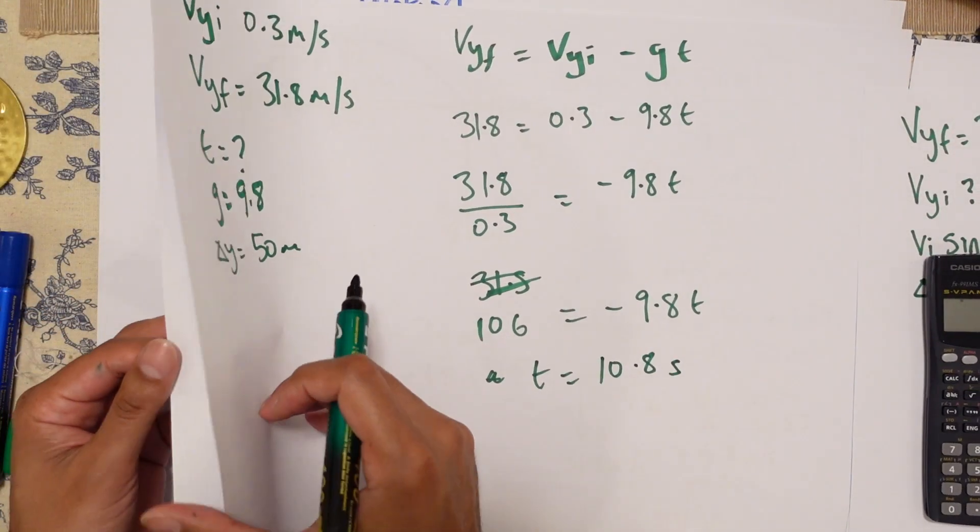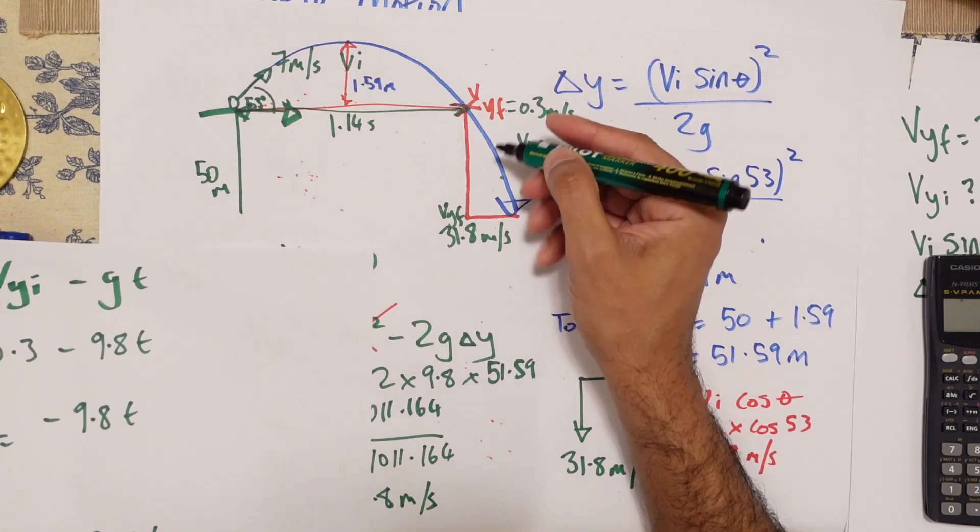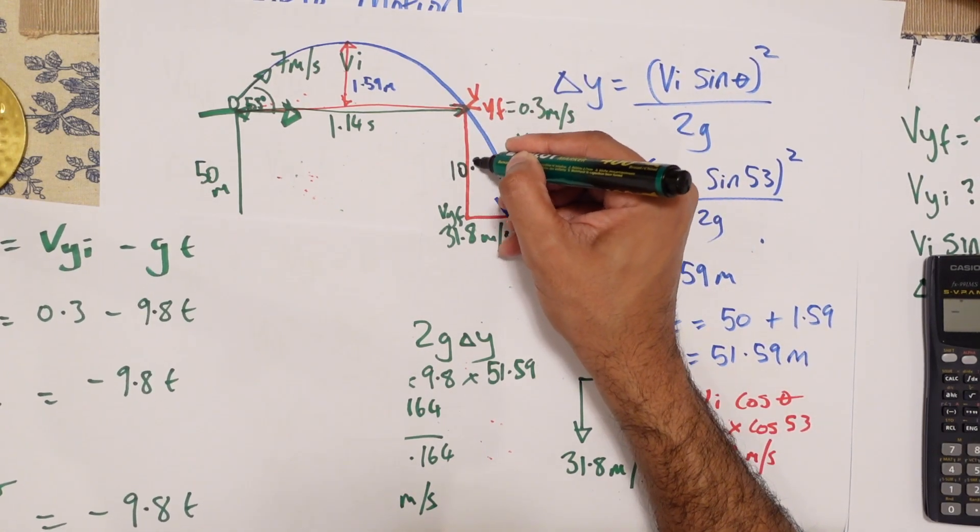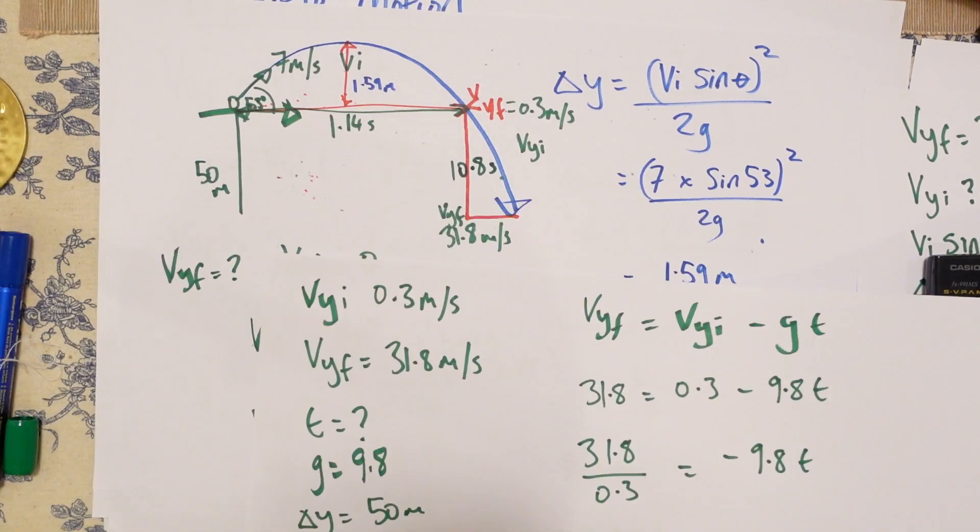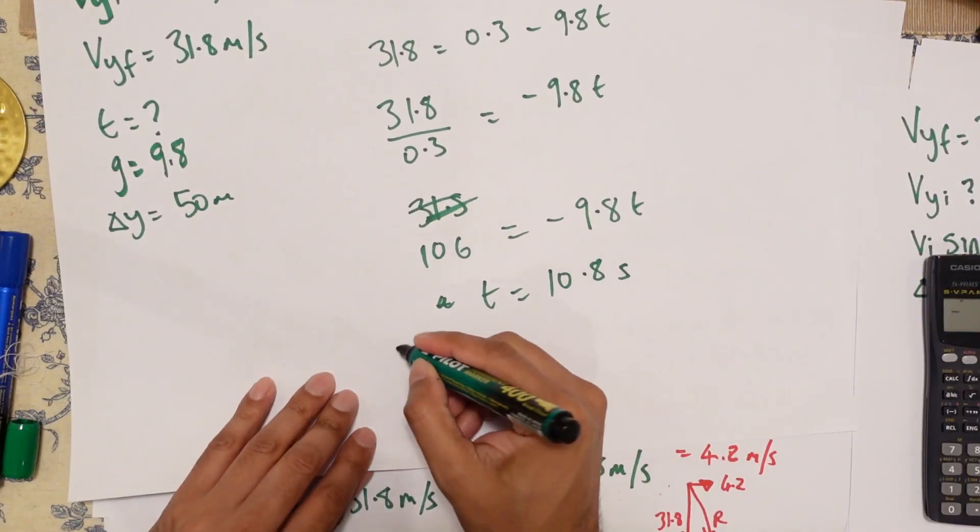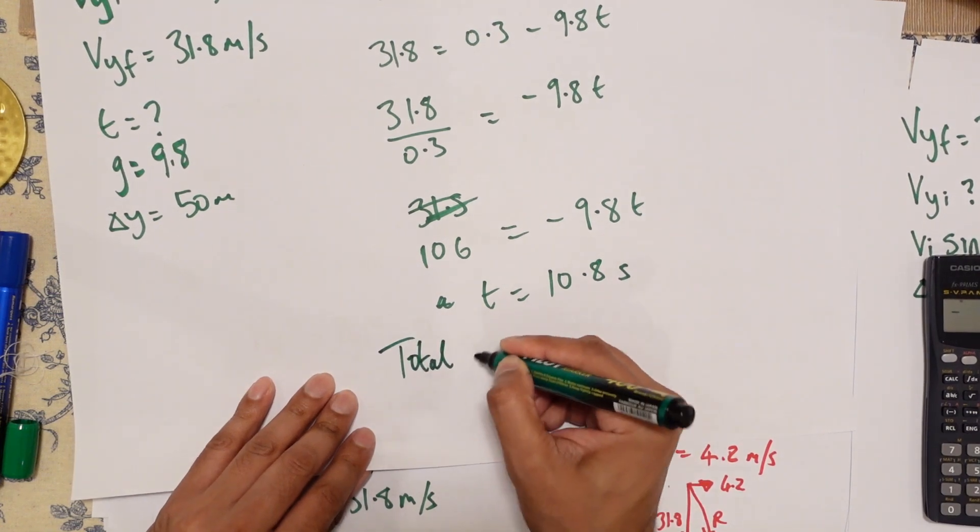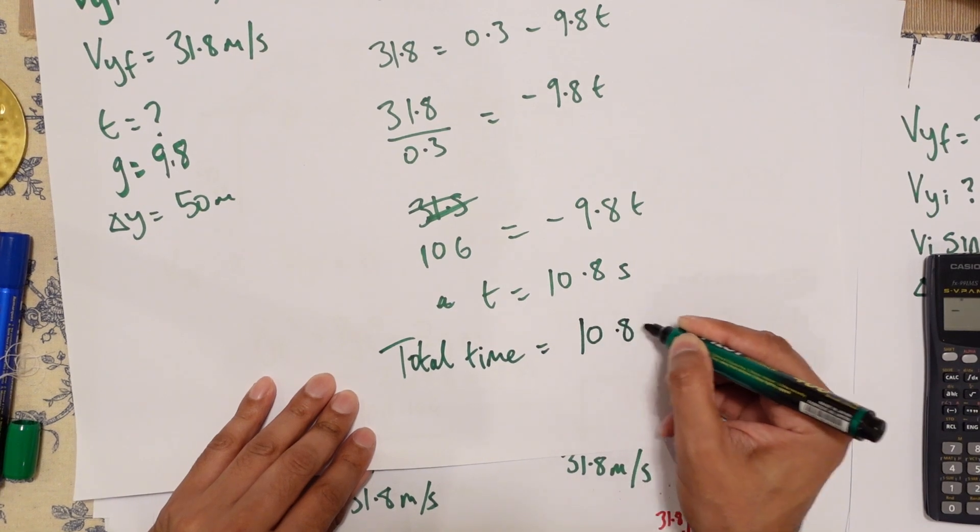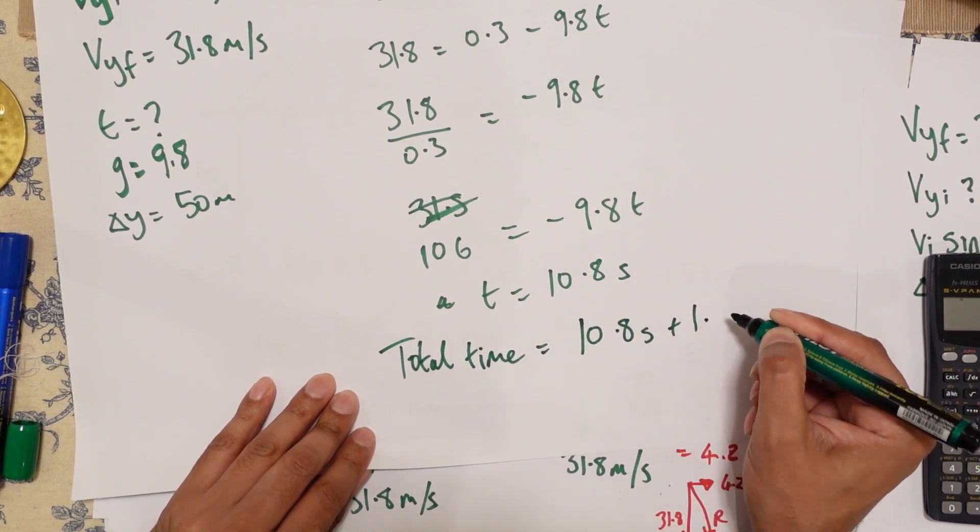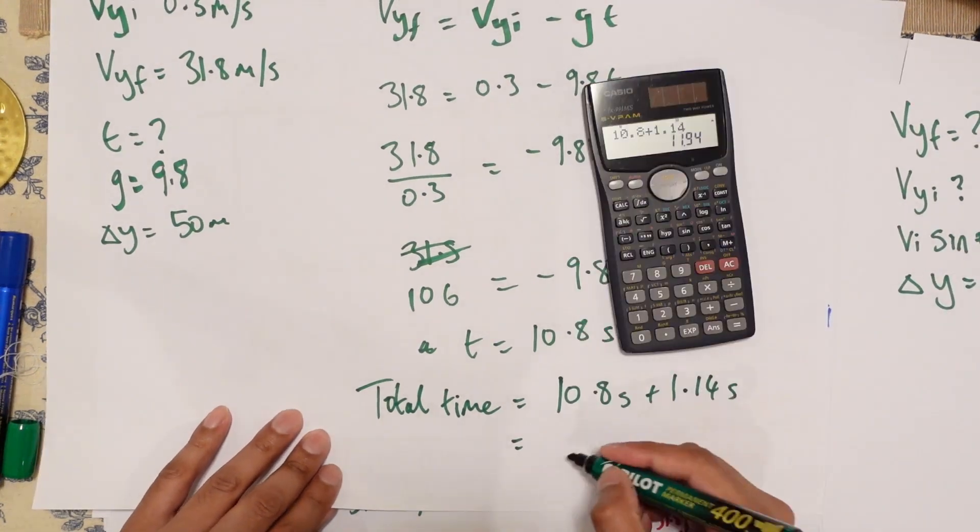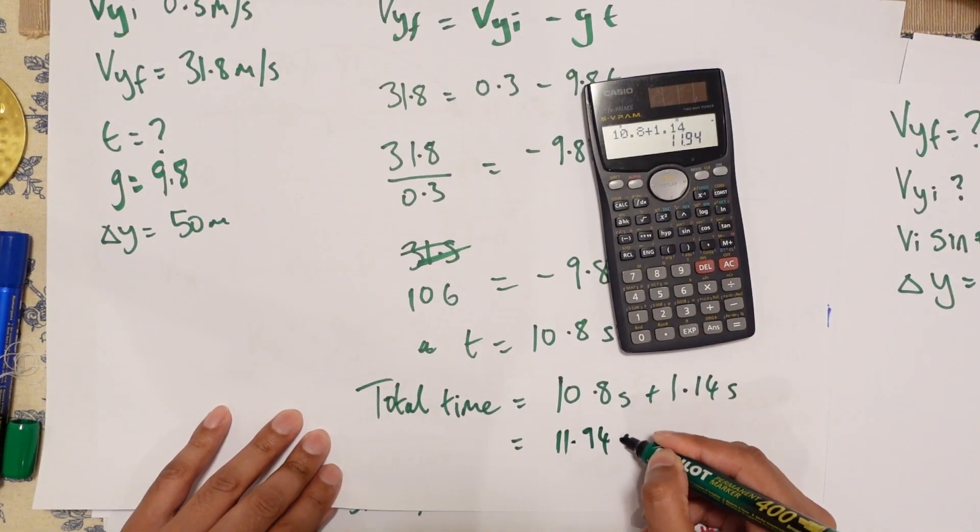So where's my diagram over here? So this falling from here to here is 10.8 seconds. So all you've just got to add up is 10.8 plus 1.14. So total time, 10.8 seconds plus 1.14 seconds, which is 11.94 seconds. And that's it.